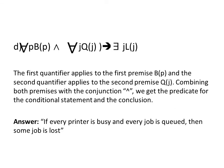Here we have the final part: for all P, B(P), and for all J, Q(J), which implies there exists some J such that L(J). The first quantifier applies only to the premise B(P), and the second quantifier applies to the second premise Q(J). Combining both premises with the conjunction, we get the predicate for the conditional statement and the conclusion. So the translation is: if every printer is busy and every job is queued, then there is some job that is lost.